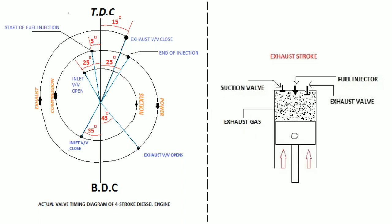Exhaust stroke: In the exhaust stroke, piston travels from bottom dead center to top dead center, so exhaust gas pushes out from the cylinder through the exhaust valve due to the upward movement of piston. The exhaust valve closes about 15 degrees after top dead center.